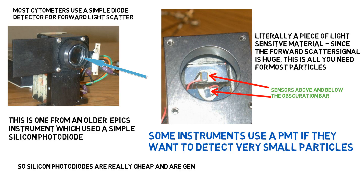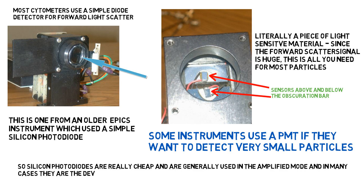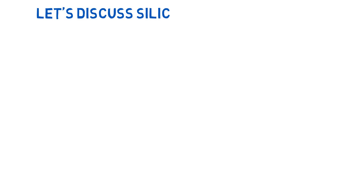Silicon photodiodes are really cheap, and they're generally used in the amplified mode. In most cases, they are the devices used in flow cytometers to collect forward angle light scatter.